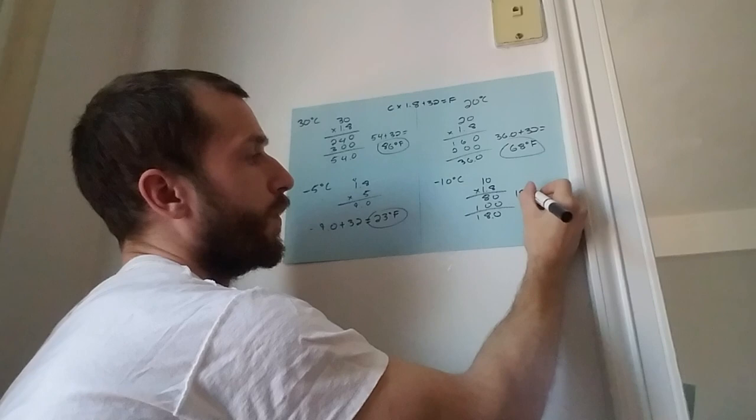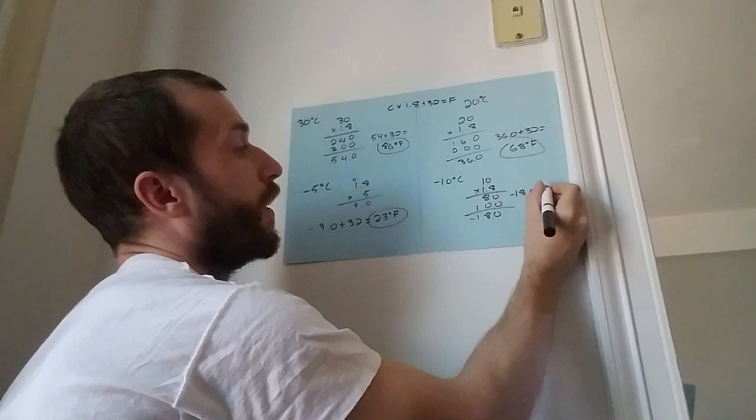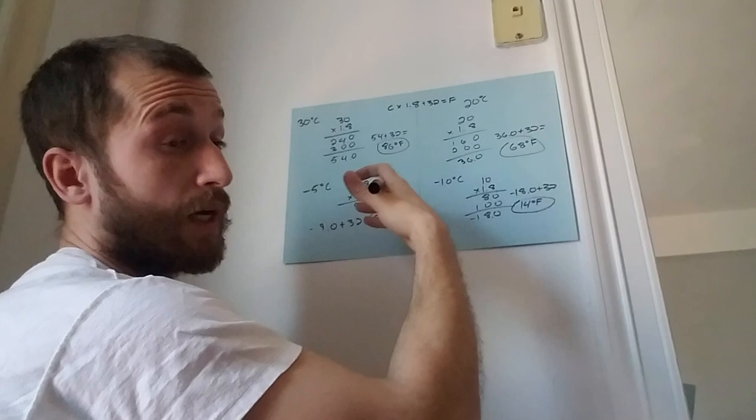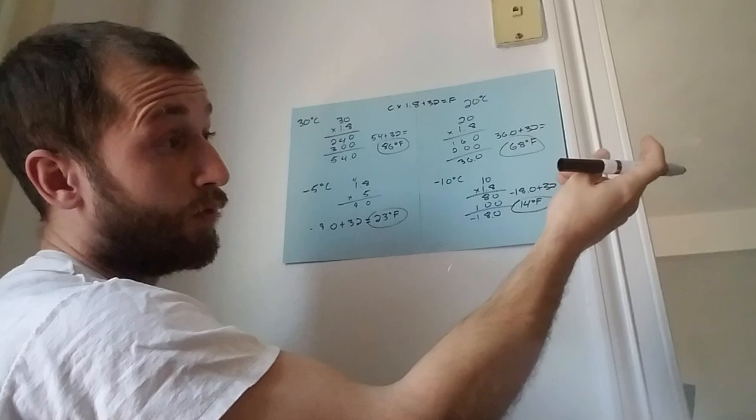Negative 18.0 plus 32, that's gonna give you 14 degrees Fahrenheit. And you could do this easily. Pick any number in Celsius and do a direct conversion right into Fahrenheit. Now there's a different formula for going from Fahrenheit to Celsius, and we'll talk about that in a later video.